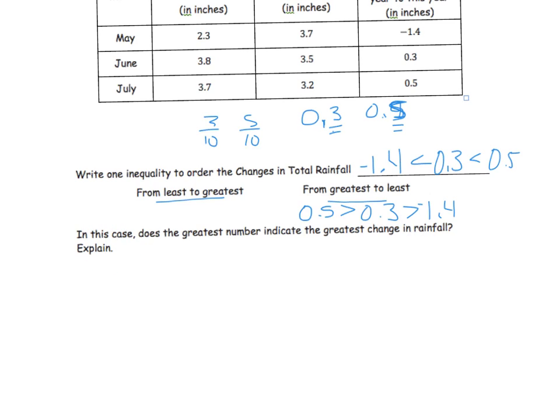So this explain part, remember, is really important. We're having you communicate mathematically. So what I just said is similar to what you should write, and I'm not going to write it here because of sake of time, but what I said again was for July, even though that's the greatest number, it changed a half of an inch. The change was a half of an inch for July, and that is the greatest number. But for May, it almost changed three times more than half of an inch. So it would be 1.5 if it was three times more. But in this case, it's the lowest number, but it's still a change. So it changed negatively, but it's still the greatest change. Make sure you write that down. It's really important.